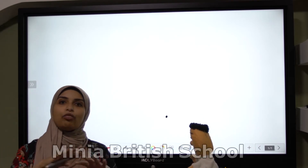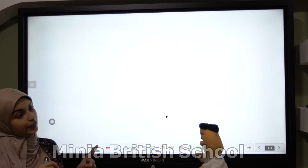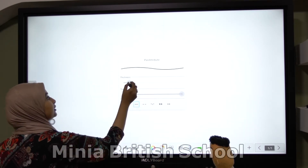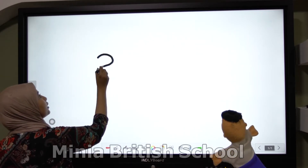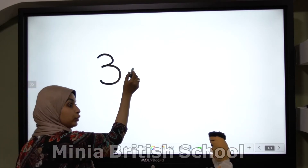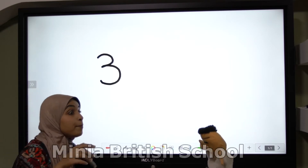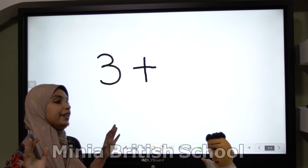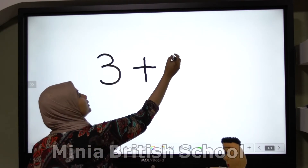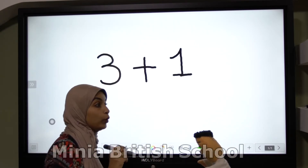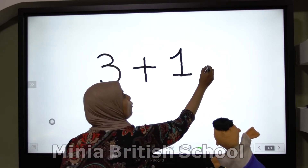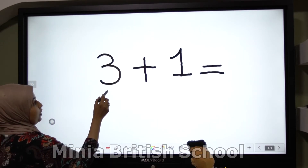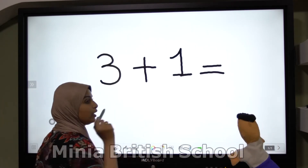First, we will choose any number. Tom, can you help me and choose a number please? Excellent! We will write number three here. And Tom, what we will put here? We will put plus, and choose any number please Tom. And we will write here another sign called equal. Another sign called what? Equal. Okay, let's read this equation: three plus one equals.